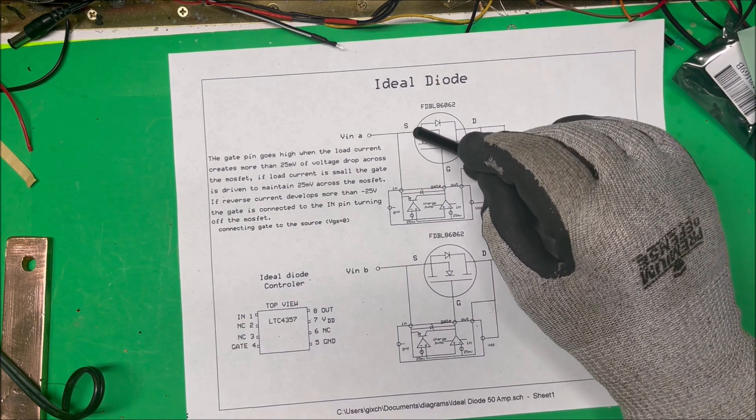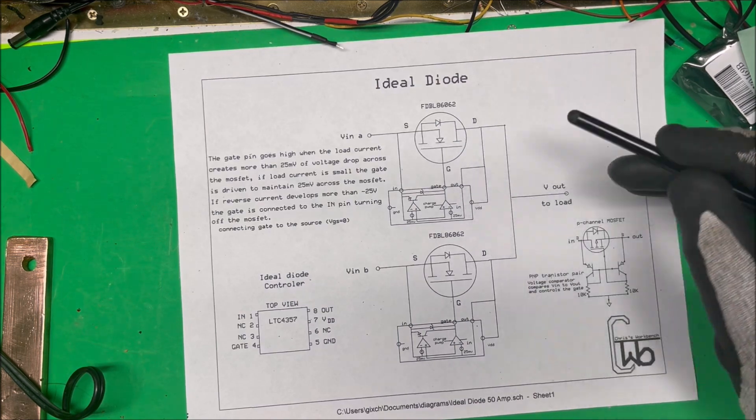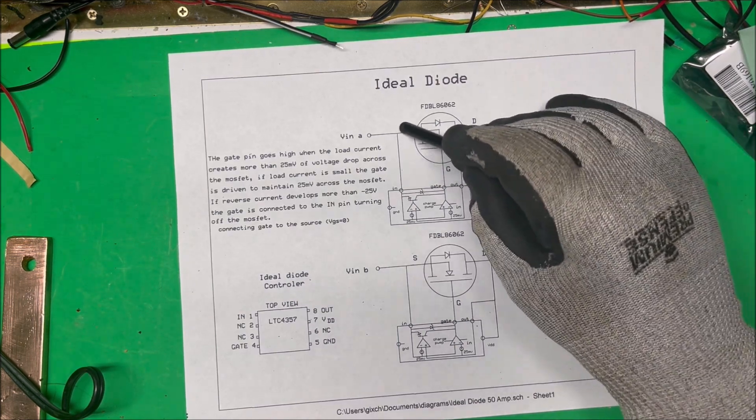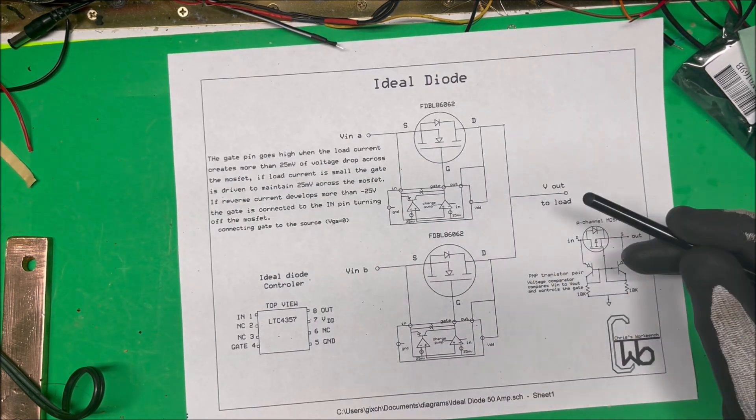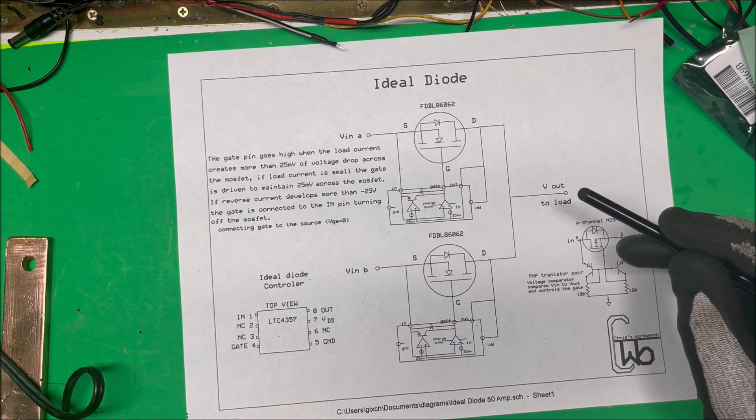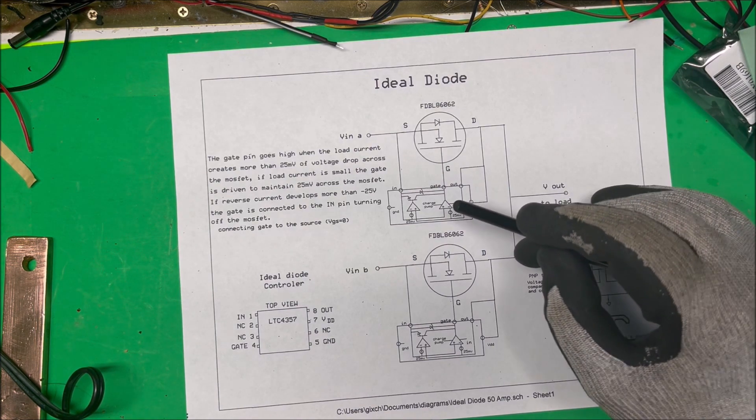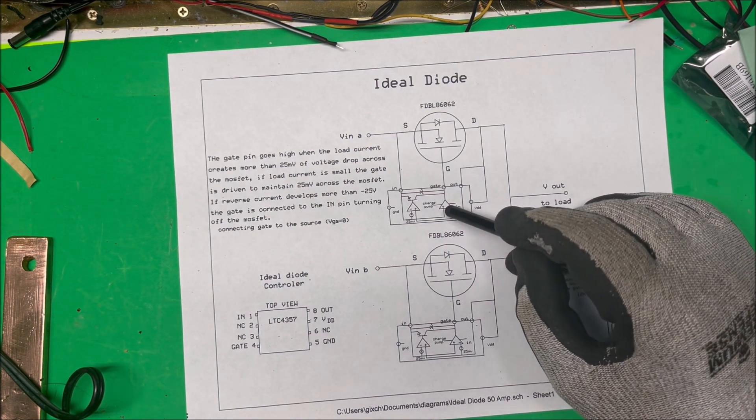You take the gate to the source, so VGS is going to be equal to zero. That's going to drain the capacitance out of the gate there.